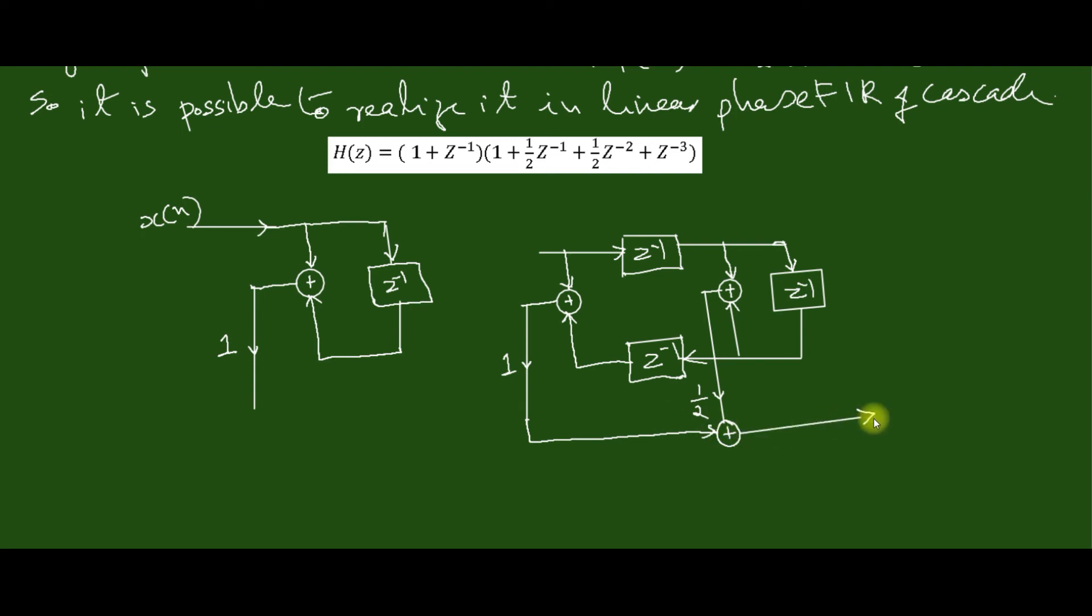This is the output of H2(z). Now we can connect this in cascade form. So we are connecting in cascade, we get the final structure in this pattern. So this is the final result of the given problem.